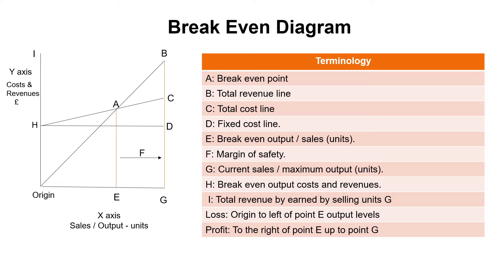Always work out the break-even point because the total cost line at C is easy. It will start at point H, end at C, and go through A. A is the break-even point. Now other areas students have problems with is profit and loss. To the right of E — i.e., the triangle ABC — that's profit.